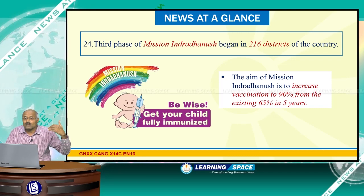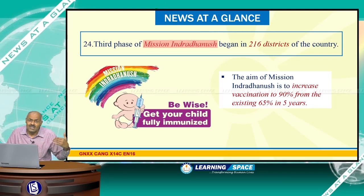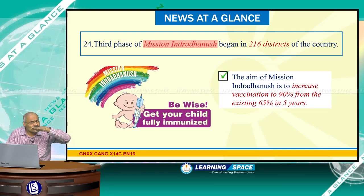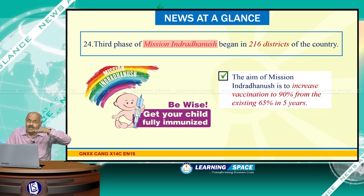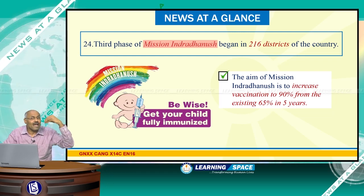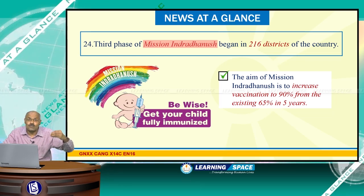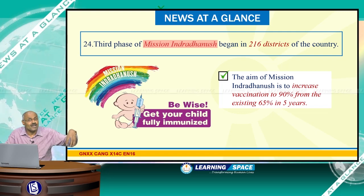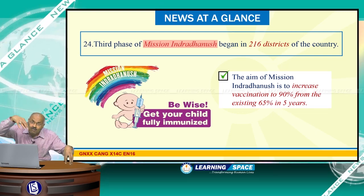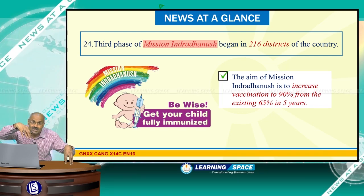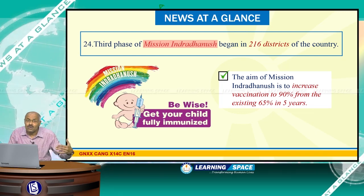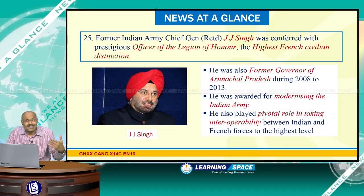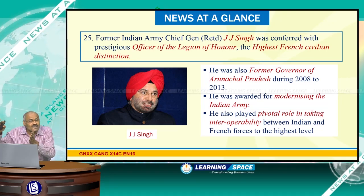The third phase of Mission Indradhanush began in 216 districts of the country. Mission Indradhanush is the vaccination program; vaccination coverage in India is currently around 65 percent, and the government's goal is to take it to 90 percent in five years, increasing by five percent each year. Initially there were seven vaccines, and four vaccines were subsequently added partially in some districts, making Mission Indradhanush a program of 11 vaccines altogether.